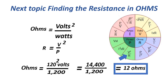The next formula for resistance: ohms equals volts squared over watts, or R equals V squared over P. Equals 120 squared over 1200 — that is 14,400 divided by 1200 — equals 12 ohms.